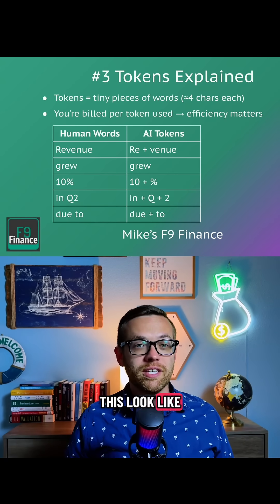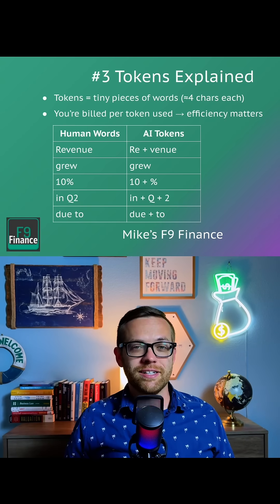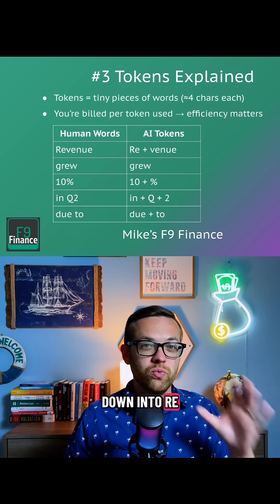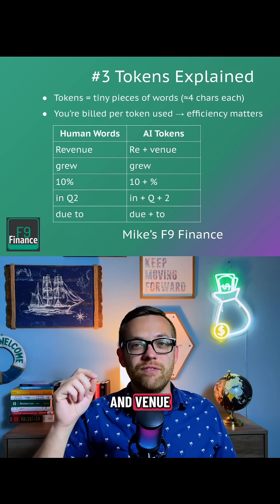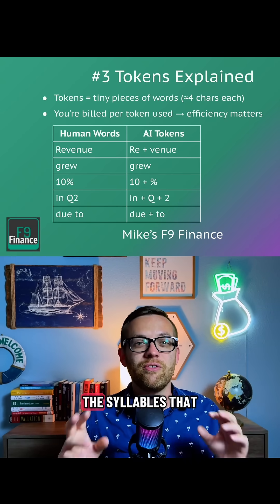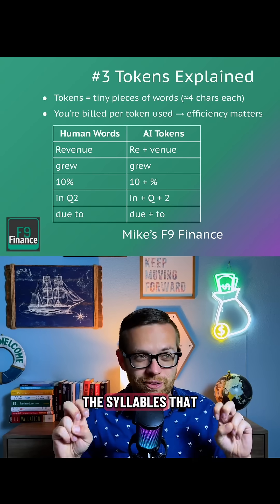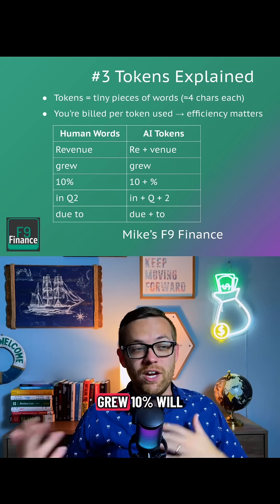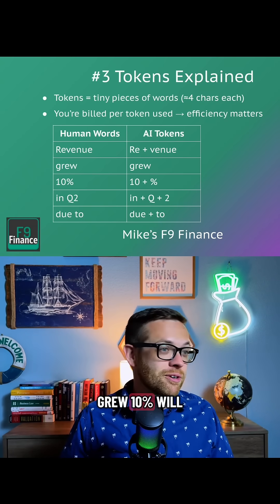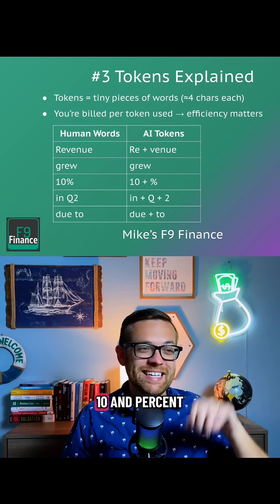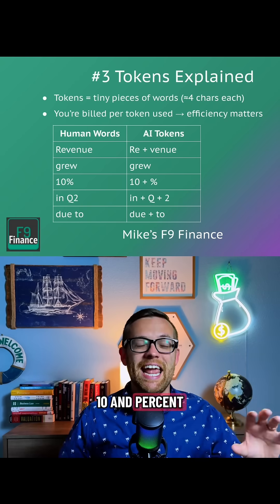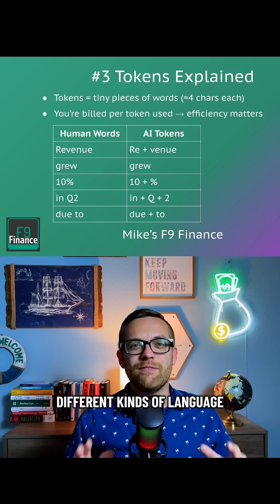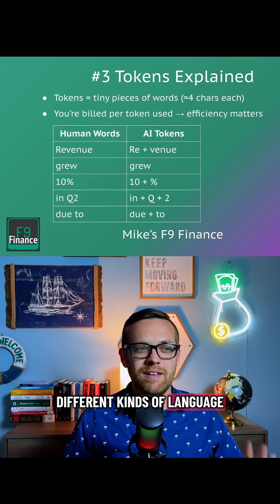So what does this look like in practice? Well, a human word like 'revenue' would be broken down into 're' and 'venue,' because those are the syllables that the token understands. 'Grew' will stay as 'grew.'